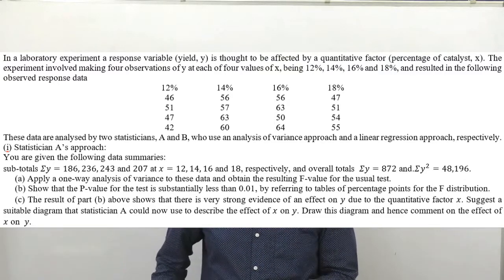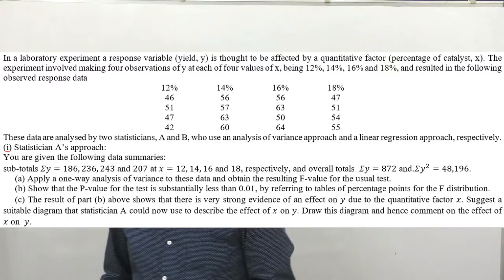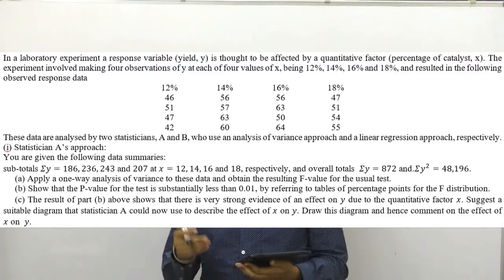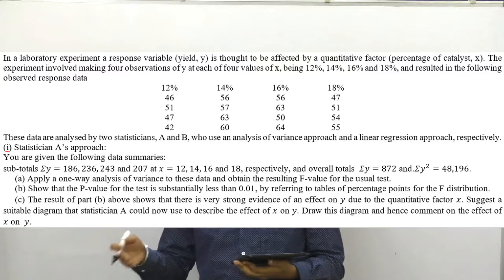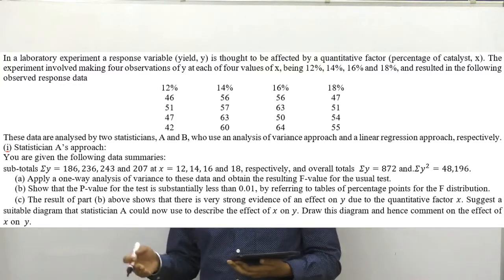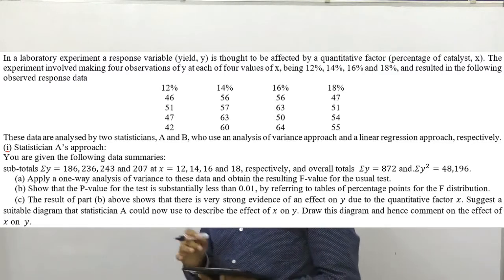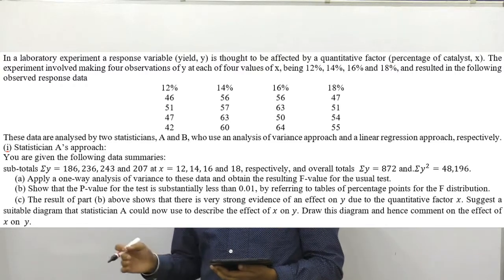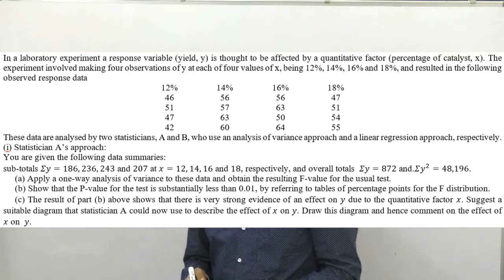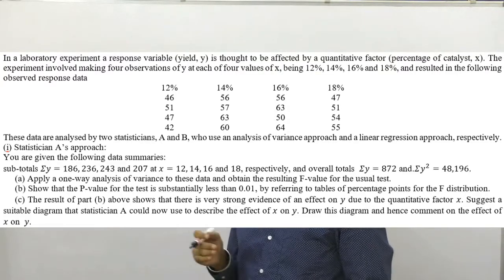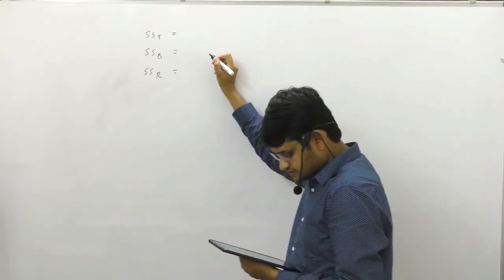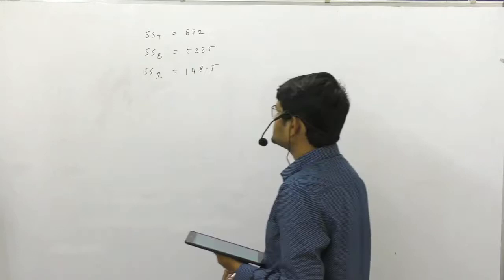Apply the one-way analysis of variance to this data and obtain the resulting F value for the usual test. F value here is the same as F-observed. The next part says: show that the P value of the test is substantially less than 0.01 by referring to the table of percentage points for the F distribution. To do this, we need to make our ANOVA table. For the ANOVA table, we need to find our SS values using the formulas from the table book.